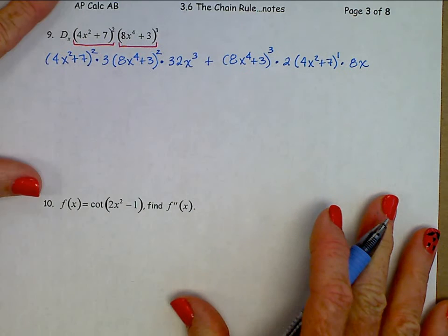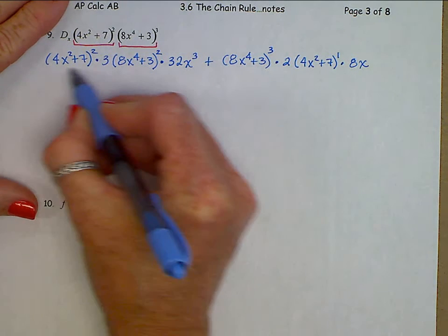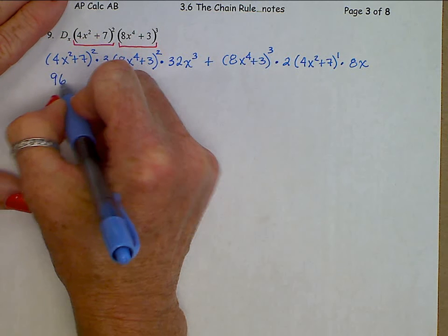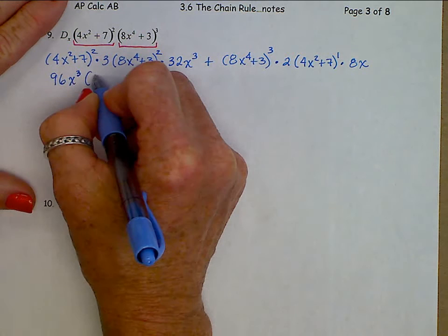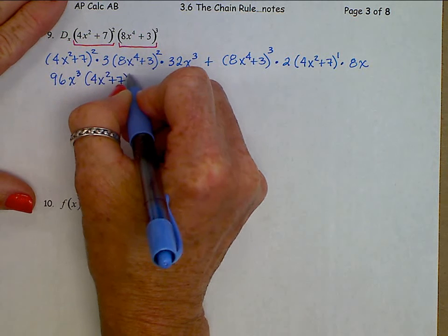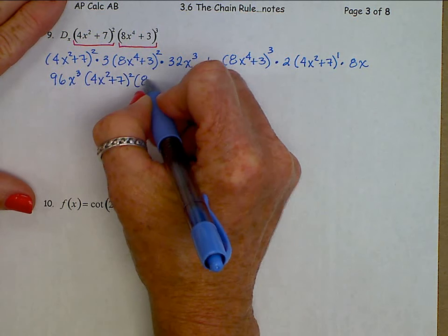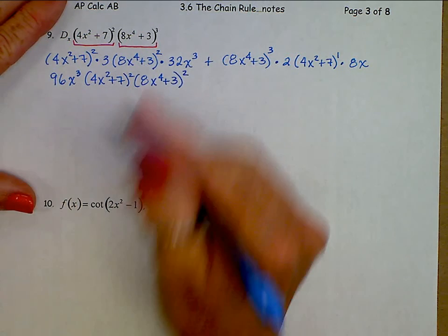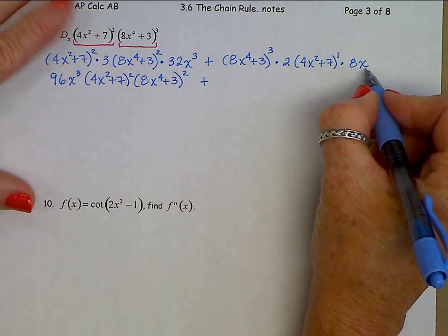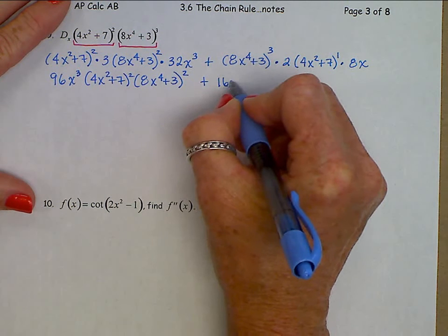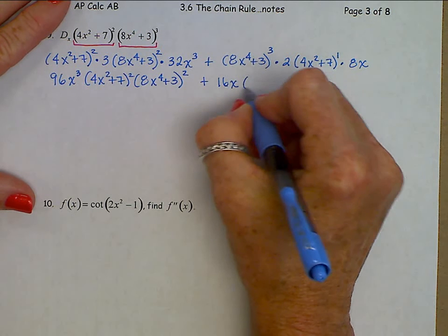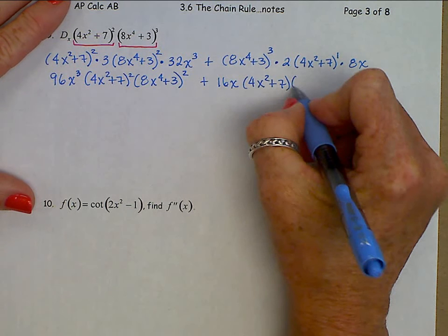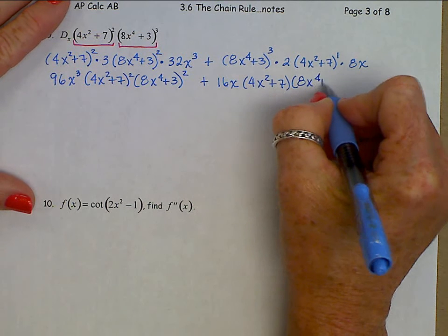Cleaning this up a bit. In the first half, I have a 3 and a 32 — that's 96X cubed — and a (4X squared plus 7) squared and an (8X to the 4th plus 3) squared. Plus the second half: 16X, and a (4X squared plus 7) to the first, and an (8X to the 4th plus 3) cubed.